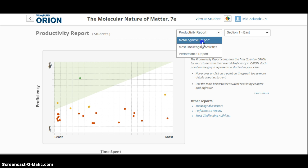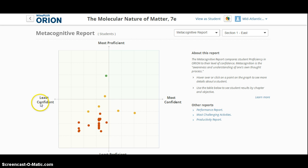The metacognitive report takes into account the level of confidence versus proficiency. So you can see here that many students are not only not proficient, but also lacking the confidence. But surprisingly, even some of these students that are showing somewhat confident or proficient, they are in this lower left quadrant demonstrating that there are some confidence issues.